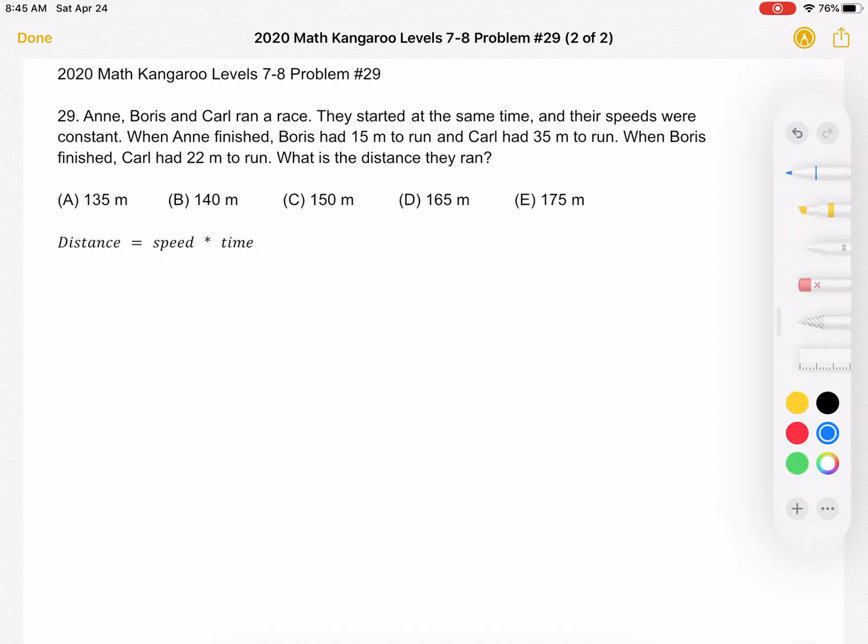Well, the problem tells us that the amount of time it takes Anne to finish, at that time, Boris has 15 meters left to run, Carl has 35 meters left to run, and then at the amount of time it took Boris to finish, Carl has 22 meters to run. So what is everything in terms of? It's in terms of time, right? When Anne, the amount of time it takes Anne to finish, we know how much the other two have left to run. So we should rewrite this in terms of time.